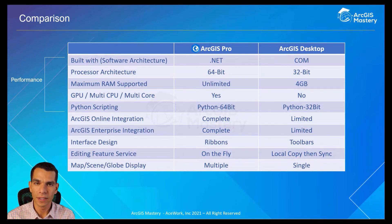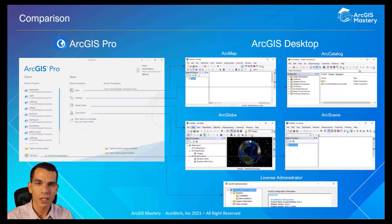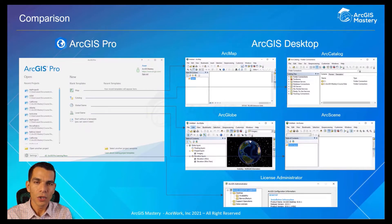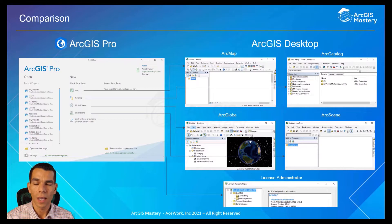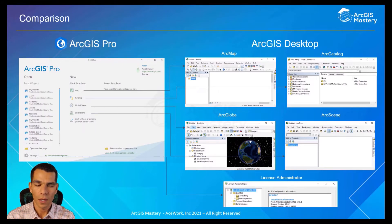ArcGIS Pro gives you the ability to work on multiple displays at the same time. When you install ArcGIS Desktop, you get five different applications that you run separately: ArcMap for 2D data, ArcCatalog for managing data and connecting to ArcGIS Server and geodatabases, ArcGlobe for 3D data on a larger scale, and ArcScene for 3D data on a small scale. All of that comes as one package in ArcGIS Pro.